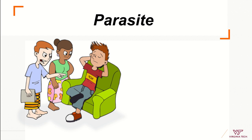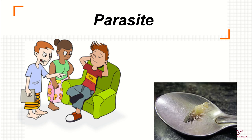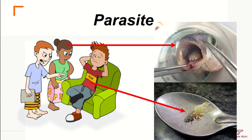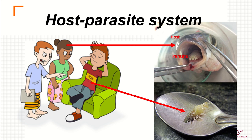Here you can see a cartoon of a parasite taking resources from the other individuals. This is an organism living in aquatic ecosystems in the ocean, and this is actually a parasite. The other species providing the resources is a fish, so the parasite lives thanks to the resources of the fish.